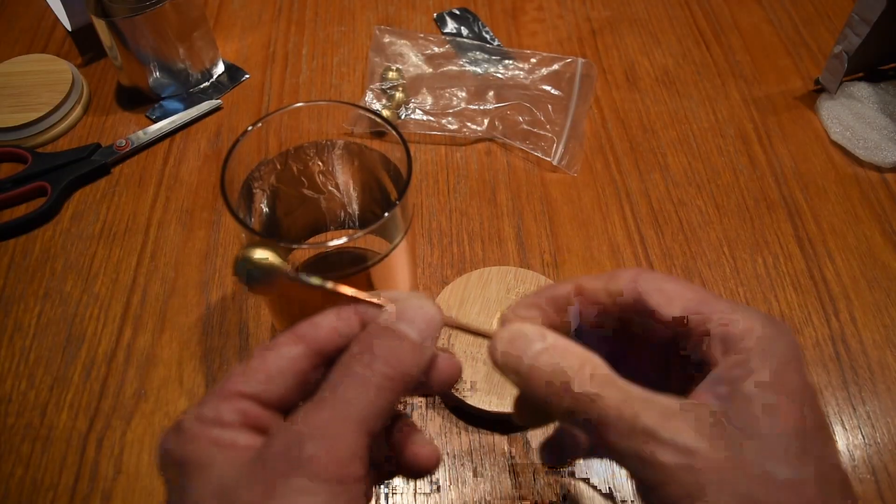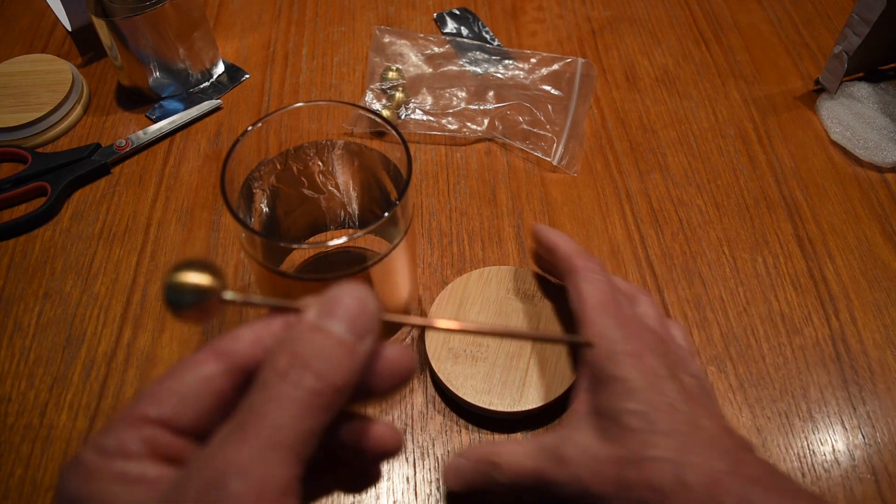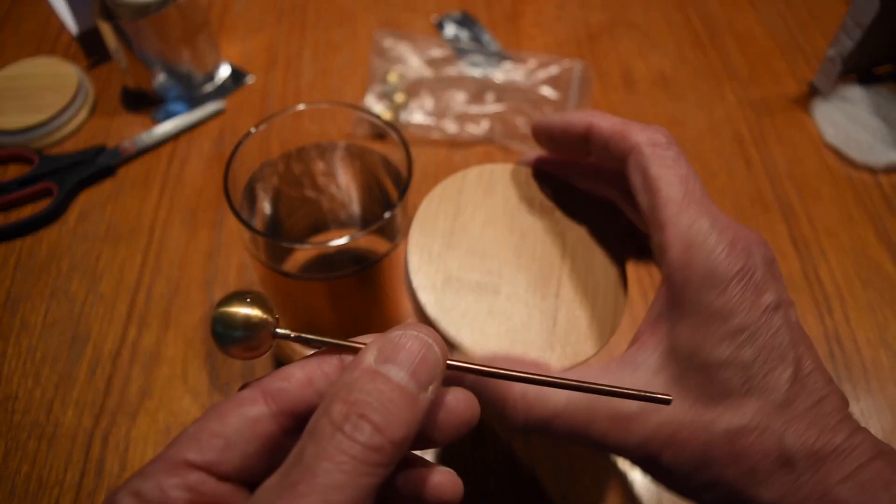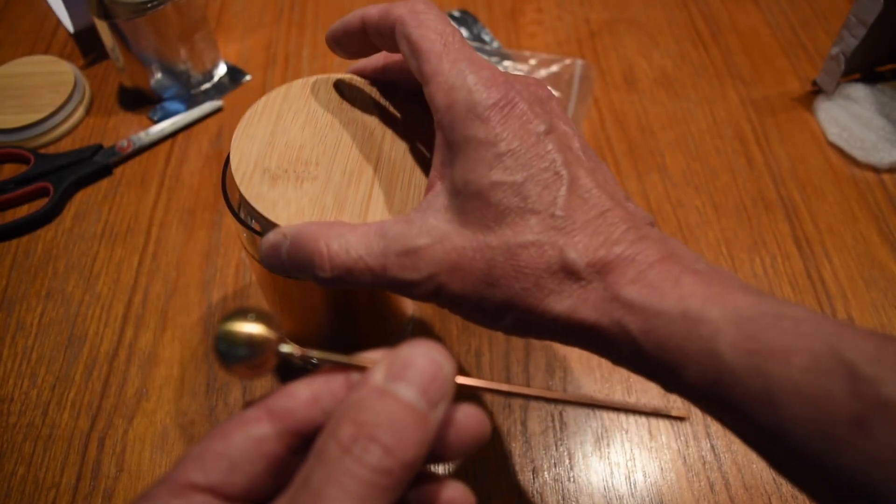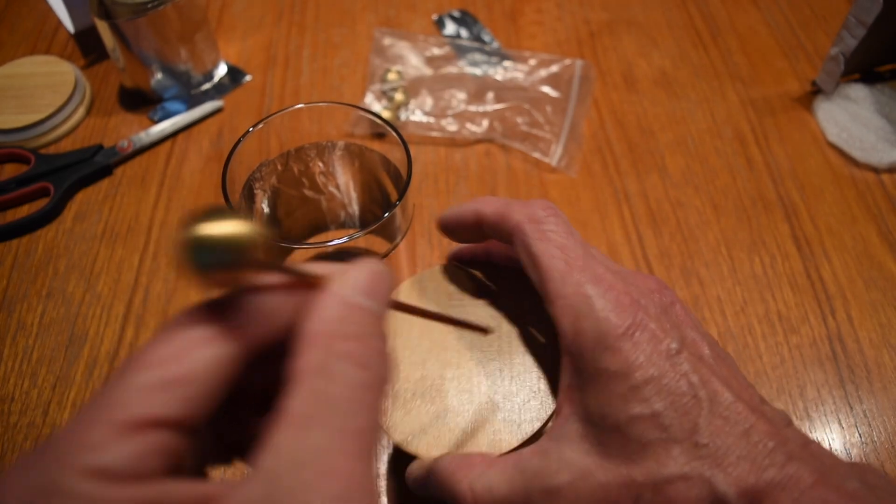Here I have the electrode. I will now drill a hole through the wooden lid to the Leiden jar, through which I can place the electrode.